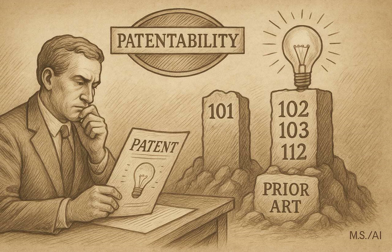That's where the Alice-Mayo test comes in — the main tool the USPTO uses now. It's a two-step process. Step one: is the claim directed to one of those judicial exceptions? They look at the core focus of the claim. If the answer is yes, you go to step two, which asks: does the claim as a whole recite something significantly more than the exception itself? Is there an inventive concept in how that exception is applied? Just saying 'do this abstract idea on a generic computer' probably isn't enough. You need some specific inventive application or improvement beyond just automating a known concept or observing a natural law.